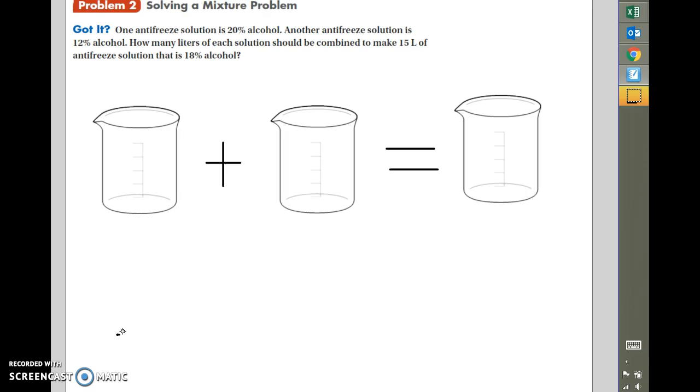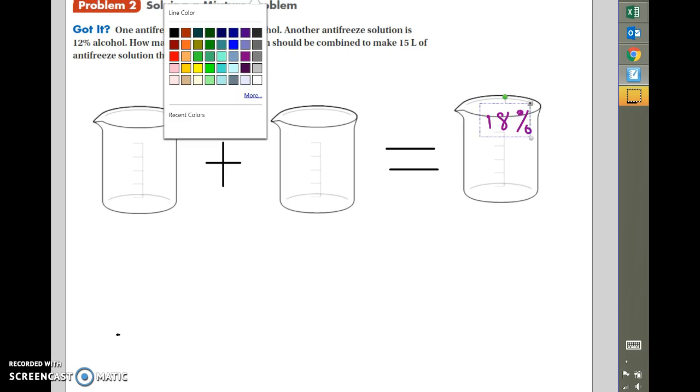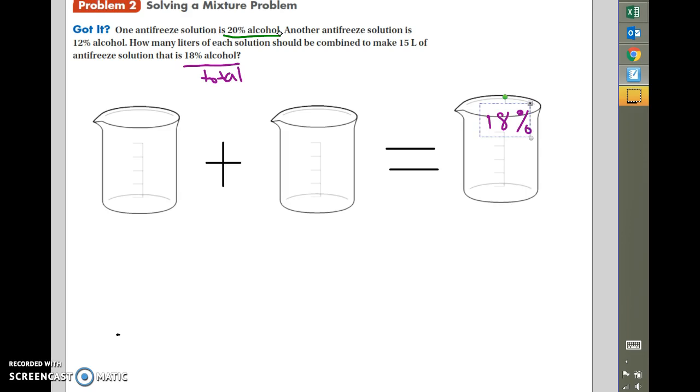So this is a new type of problem. This is called a mixture problem. And the way that we're going to set these up is we're going to use this little diagram. And if you want, you can just do boxes, which is what I do a lot of times. I'll just draw a box plus a box equals a box. And what we're going to do is we're going to look at our question. And we have percentages assigned to each of these boxes. So it says one antifreeze solution is 20% alcohol. Another antifreeze solution is 12% alcohol. How many liters of each solution should be combined to make 15 liters of antifreeze solution that is 18% alcohol? So right here, 18% alcohol, that is your total. Because you're combining two parts to make a whole. So I'm going to attach that 18% to this last one over here. My 20% is the first one that was mentioned, so I'll put 20% here. And my 12% is the second one that was mentioned. And the 12% and 20% are going to be combined to the 18%.